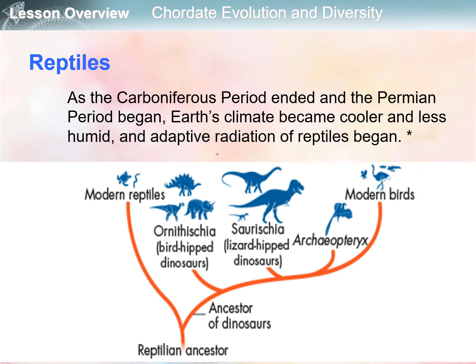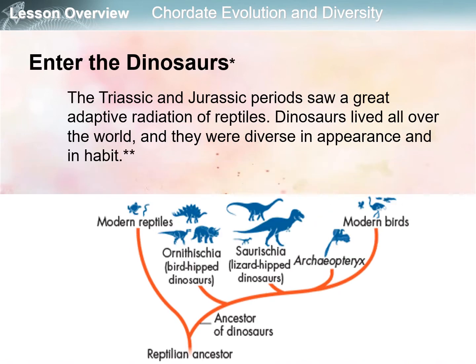As the Carboniferous period ended and the Permian period began, Earth's climate became cooler and less humid, so another adaptive radiation of reptiles began. This cladogram shows the current hypothesis about the relationships between living and extinct reptiles. The reptilian ancestor is at the base of the cladogram — on the left lineage are the modern reptiles, and on the right lineages, which are the ancestors of dinosaurs, you have the different dinosaur groups until modern birds evolved.